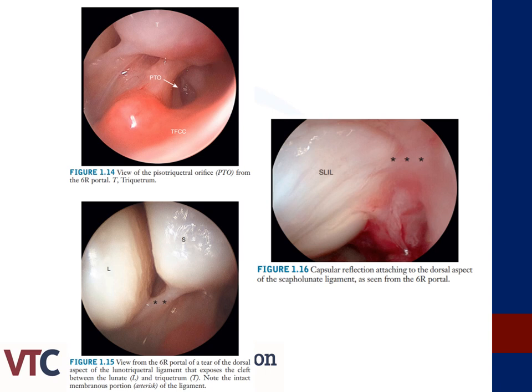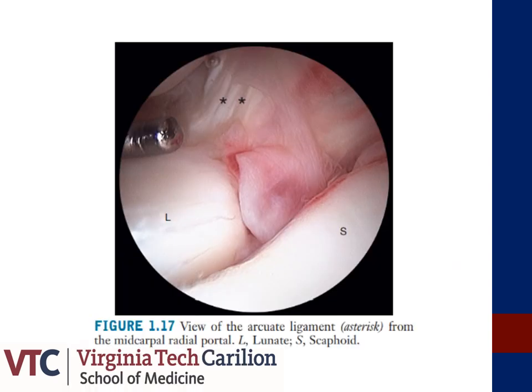This slide provides arthroscopic images obtained through the 6-R portal. The top left image is a view of the pisotriquetral orifice. The right image demonstrates the dorsal capsular attachment to the SL interosseous ligament, and the bottom left image represents a tear of the dorsal aspect of the interosseous ligament and the subsequent instability between the carpal bones. Here is a depiction of the arcuate ligament through the midcarpal radial portal, composed of the scaphocapitate and triquetral hamocapitate ligaments — a critical volar midcarpal stabilizing ligament.